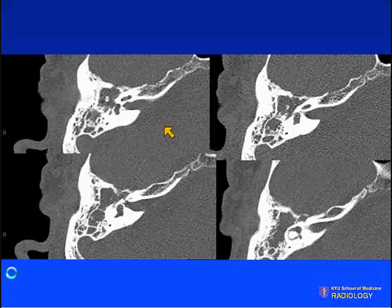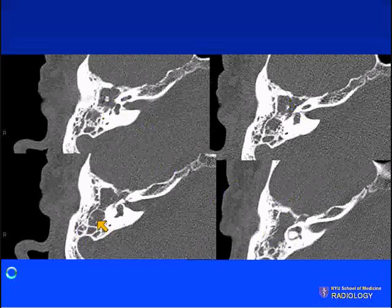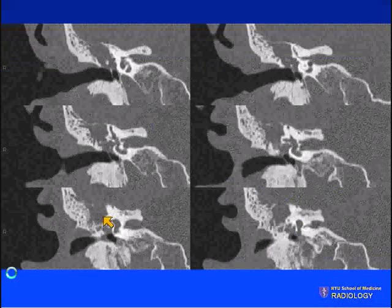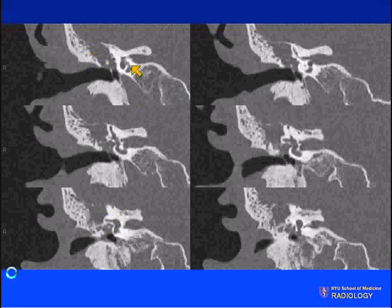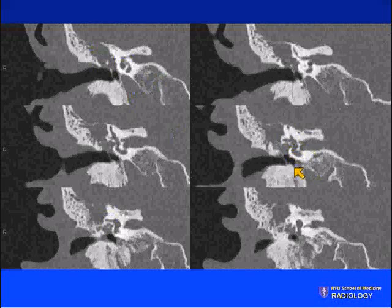In acquired cholesteatoma in an adult, we can see soft tissue filling the middle ear with expansion of the attic and antrum, and erosive changes of the head of the malleus and portions of the body. On coronal images, there is soft tissue within the mastoid air cells, with thinning and dehiscence of the tegmen. We always want to evaluate the lateral semicircular canal to ensure no fistula formation. In this case, we can see erosive changes along the horizontal segment of the facial nerve.